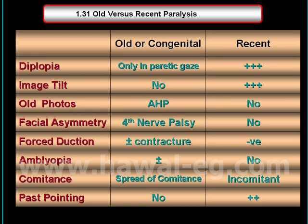About the forced ductions: it is passive in recent paralysis, while in old paralysis, due to contractures of the muscles, there is positive forced ductions. Amblyopia in recent paralysis doesn't occur, while it is a prominent feature in old paralysis.